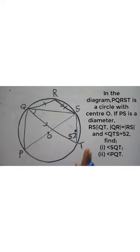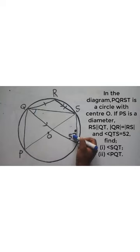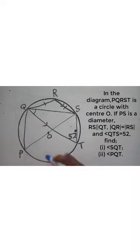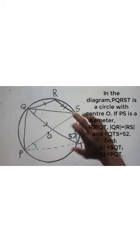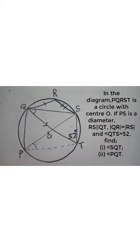When solving anything in circle theorems, what you have to ask yourself first is: what are you to find, and what do you know? What we have to find is angle SQT, and what we know is the 52-degree angle. So how can that known angle help us find the angle SQT? If I can find the angle at one point, I can use it to find the related angle.